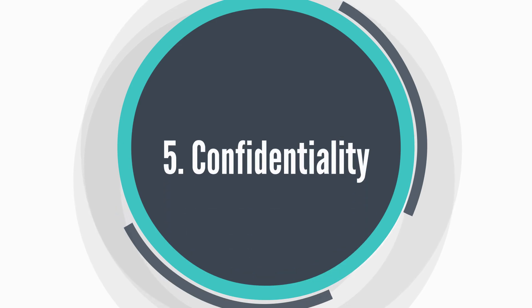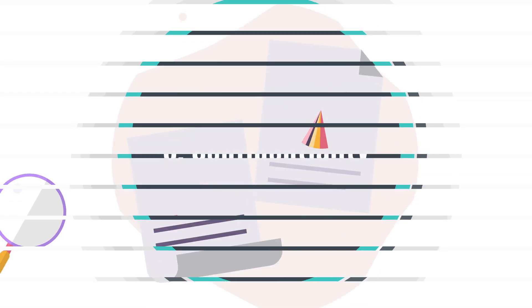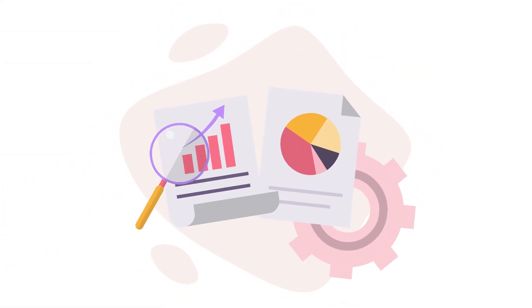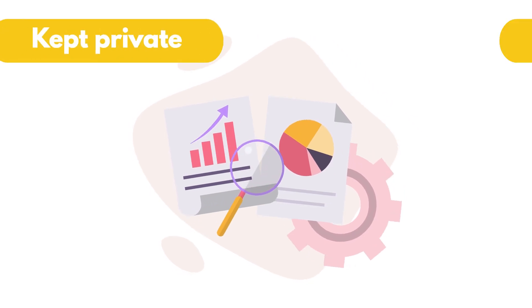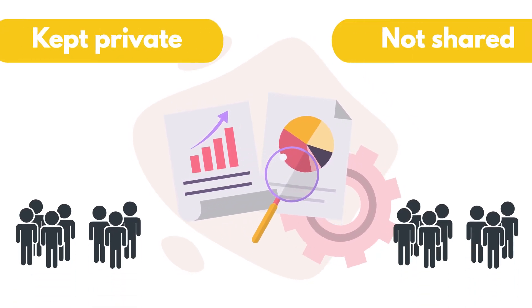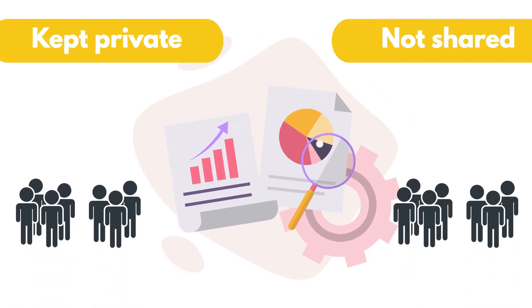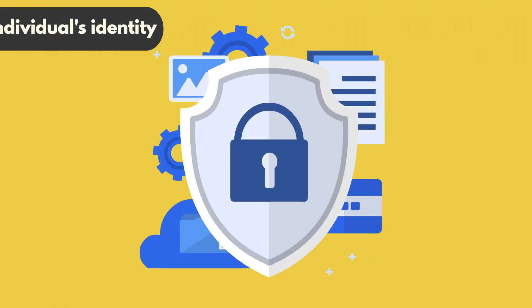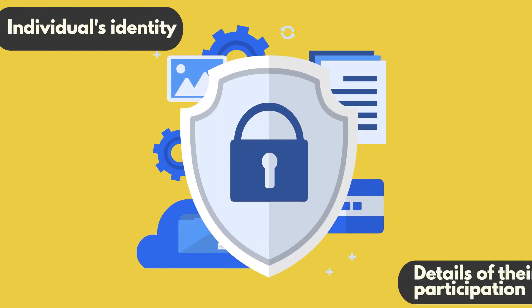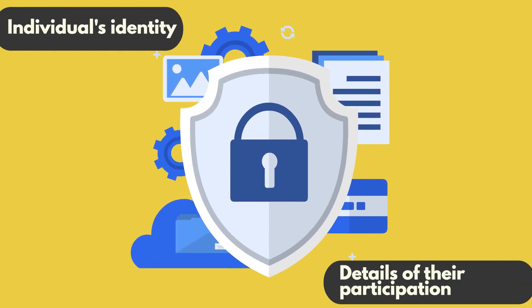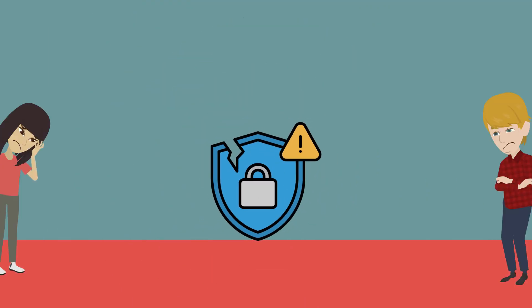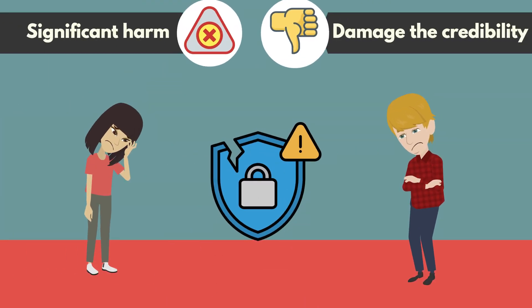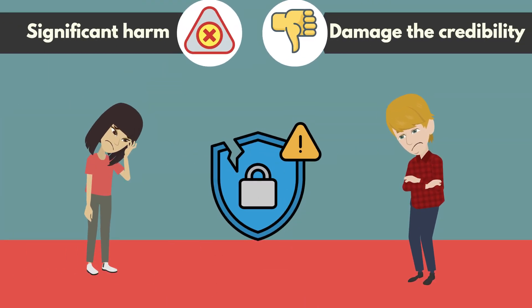5. Confidentiality. Confidentiality means that any information obtained during research or treatment will be kept private and not shared without the participant's explicit consent. This protection applies to both the individual's identity and the details of their participation. Breaches of confidentiality can cause significant harm to the participant and damage the credibility of the research.